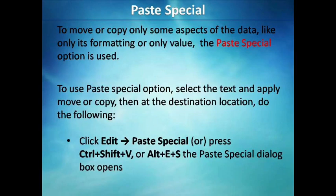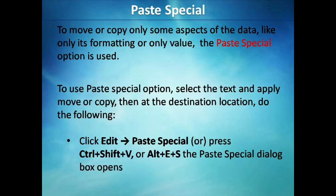The next topic is Paste Special. Pasting text normally moves or copies the entire information as-is from the original location to the new location. But there is a special feature in OpenOffice Writer called Paste Special. Using this option, we move or copy only some aspects of the data. After pasting in a new location, we may change some values or formatting without affecting, or sometimes affecting, the original document. These are the steps to follow to use Paste Special after moving or copying the text.